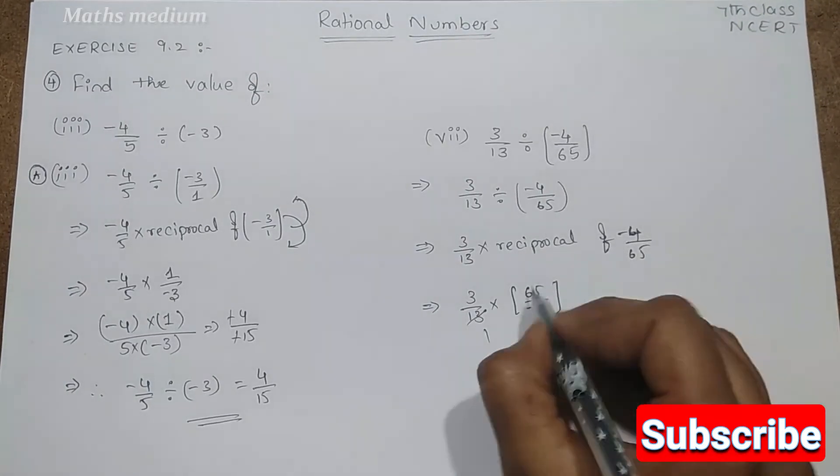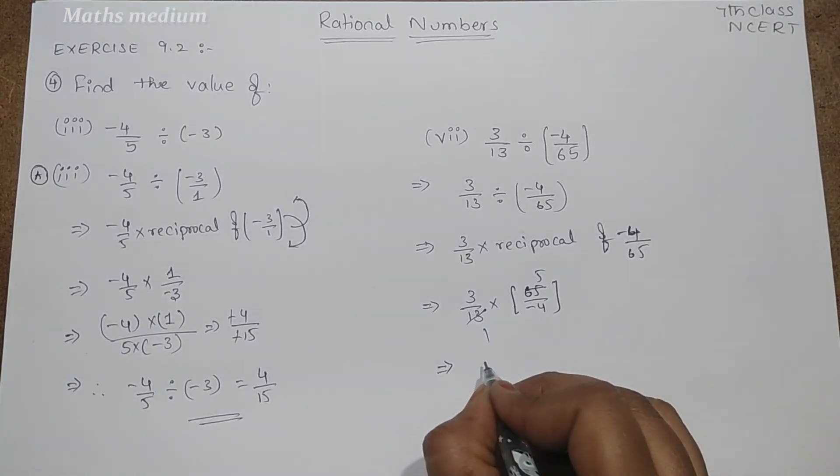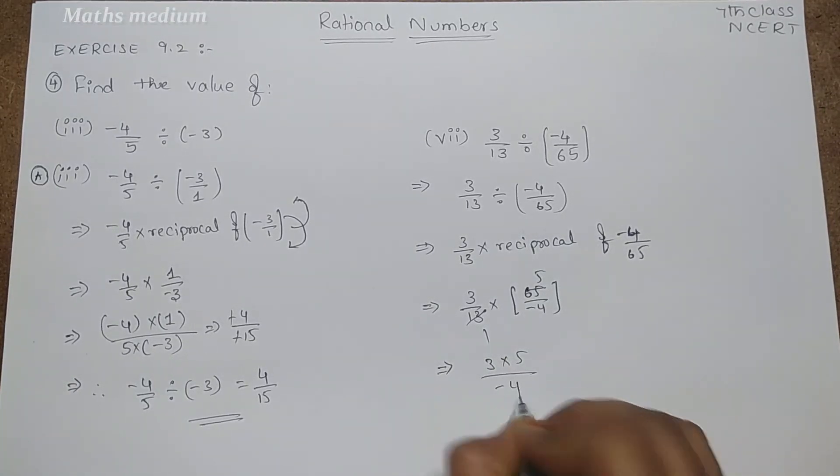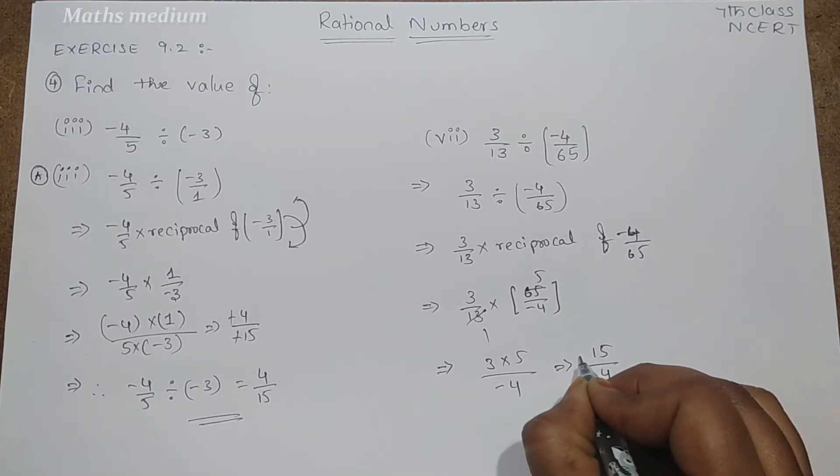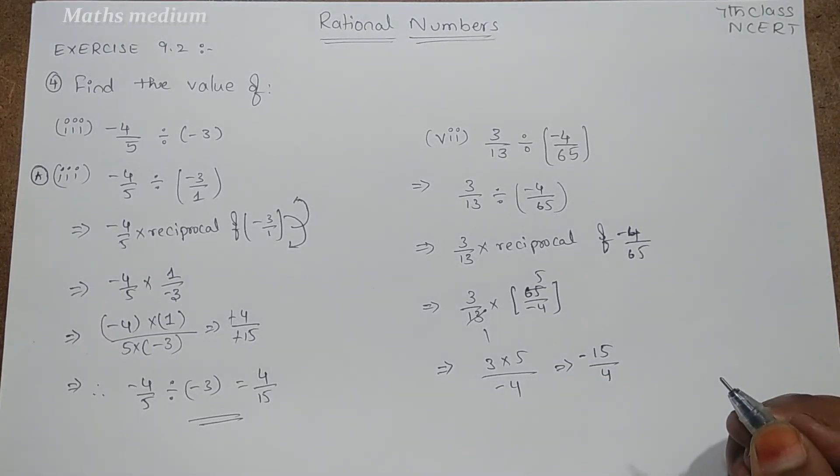So 13 into 65 is 5, so 3 into 5 divided by -4, that equals 15/4, or rather -15/4.